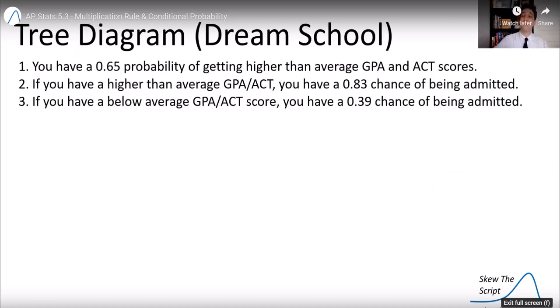We're going to do a tree diagram of getting into your dream school. Say you have a 65% probability of getting a higher than average GPA and ACT score. If you have a higher than average GPA and ACT score, you have an 83% chance of getting admitted. If you have a below average GPA and ACT score, you only have a 39% chance of being admitted. So it's obviously advantageous to get a higher than average GPA and ACT score.